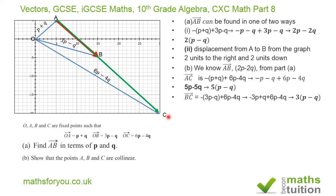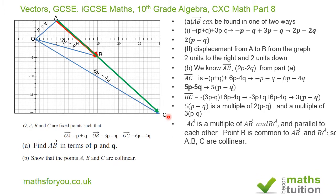So what you then have is that 5(P minus Q) is a multiple of 2(P minus Q) and a multiple of 3(P minus Q). They are parallel. Vector AC is a multiple of vector AB and vector BC, and they're parallel to each other. Besides, point B is common to vector AB and vector BC, so the points A, B, and C are collinear.